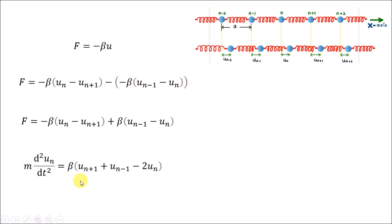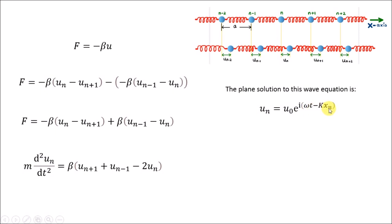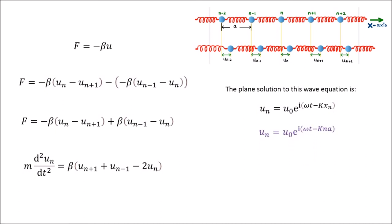The plane wave solution for this equation is u_n = u_0 e^{i(omega t - kx_n)}, where u_0 is the amplitude of oscillation, omega is the angular frequency of oscillation, and x_n is the equilibrium x-coordinate of the nth atom. Since x_n = na, we can write this expression accordingly. We can look for similar solutions for the (n-1)th and (n+1)th atoms.